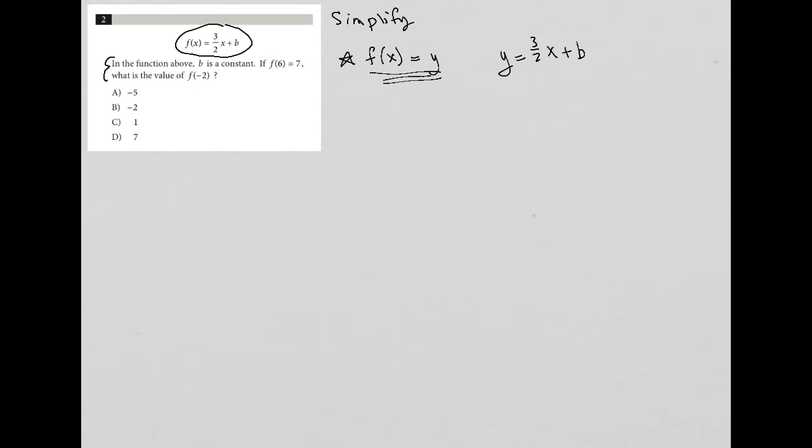The question says in the function above, b is a constant. If f of six equals seven, what does that mean? That means that when x equals six—we're replacing this x with six—then y or f(x) is equal to seven. I like to think of it as when x equals six, y equals seven, and just keep in mind that y and f(x) mean the same thing.